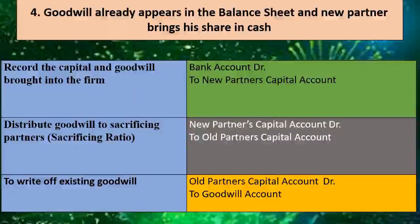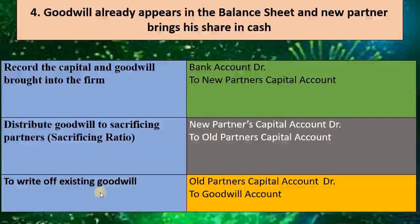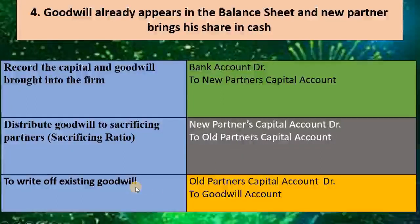The fourth situation: goodwill already appears in the balance sheet and the new partner brings his share in cash. It is a combination of the first and second situations. Here we have to follow three transactions: recording goodwill brought in cash, distribution of goodwill, and writing off the existing goodwill. For the first transaction, as in the case of the first situation, the entry is bank account debit to new partner's capital account because cash comes in and the new partner brought the cash. The second transaction is redistribution of goodwill, as in the previous case.